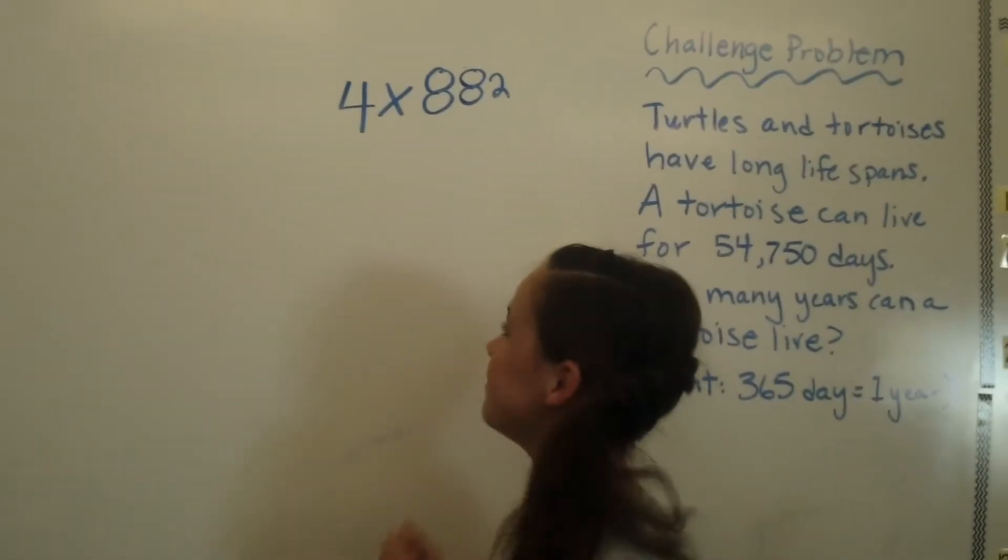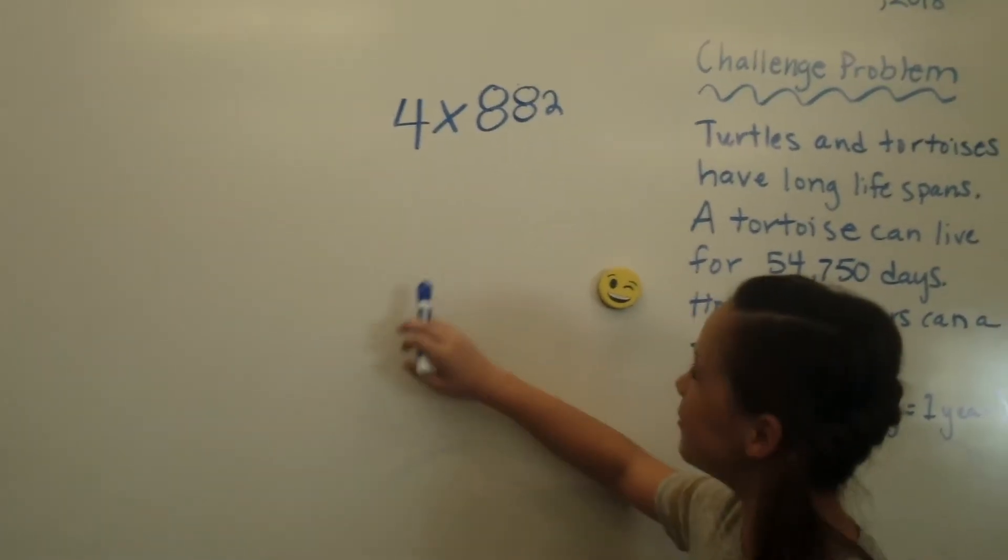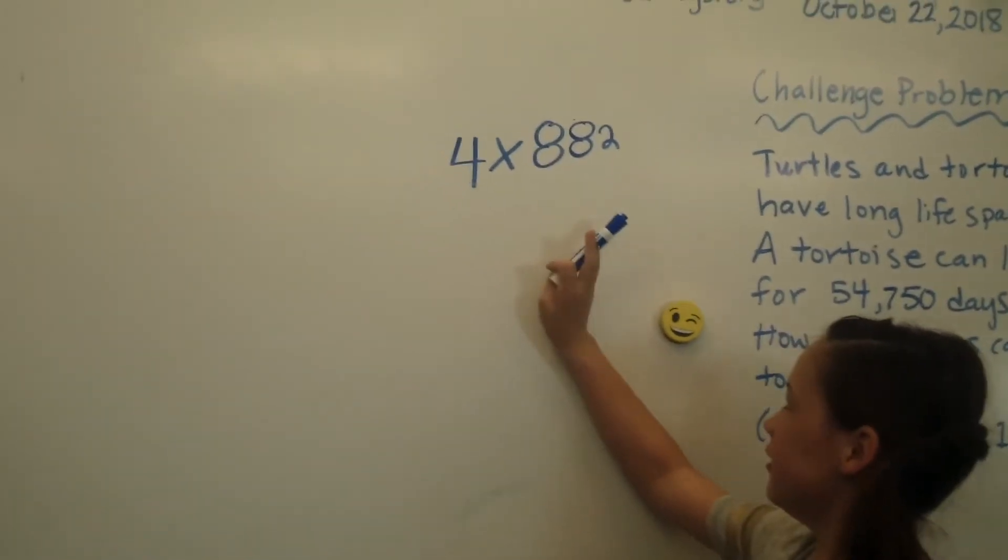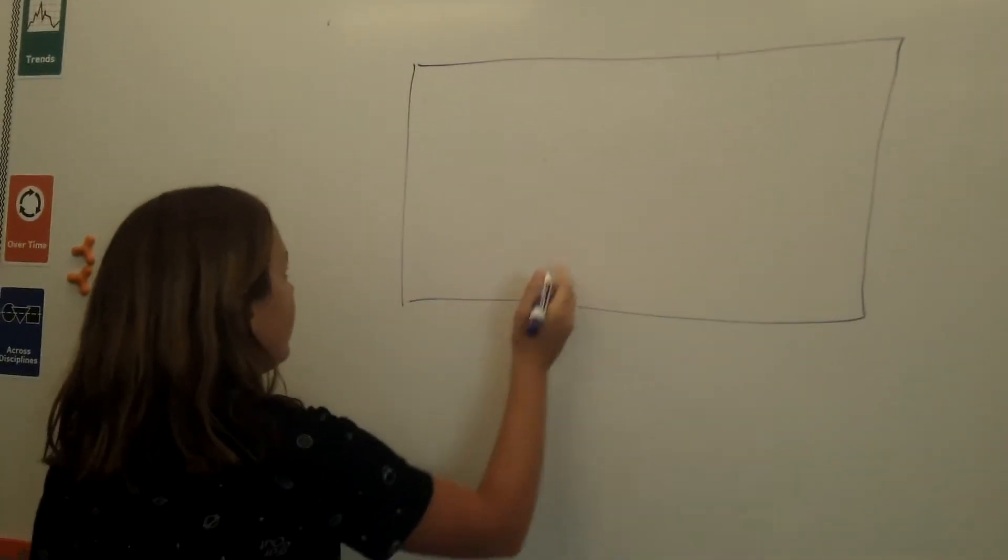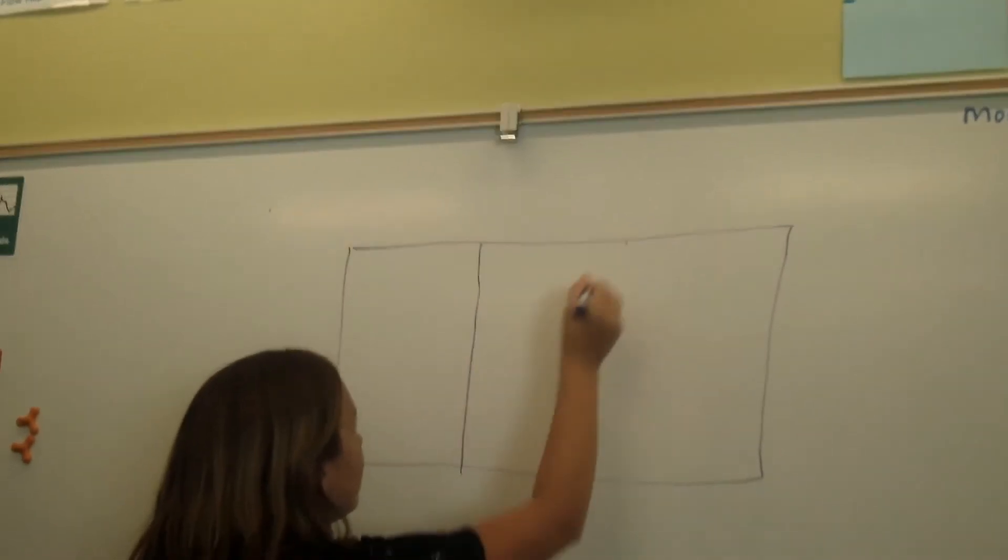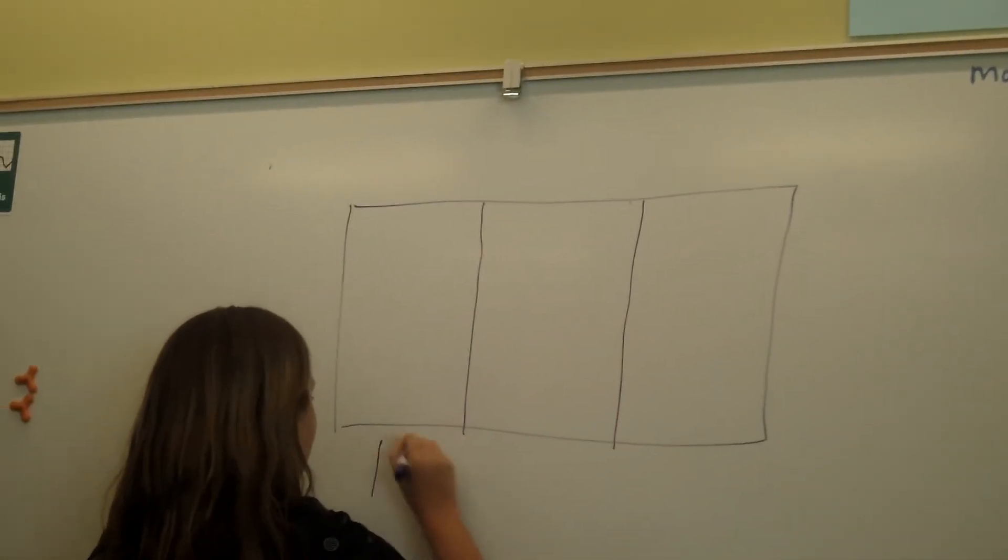The first step is to add a model. You pick a number, a couple numbers to times, like 4 times 882. Then you're going to draw your model, and separate it into hundreds, tens, and ones.